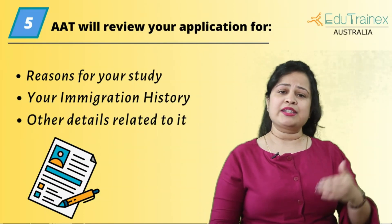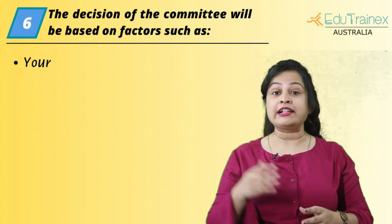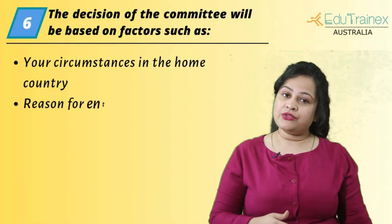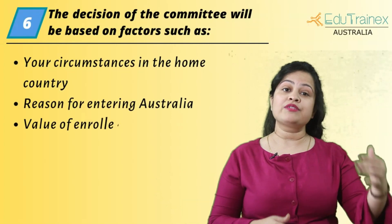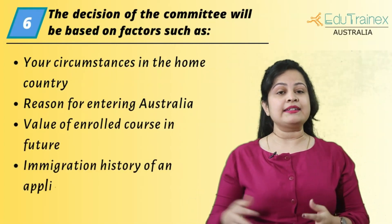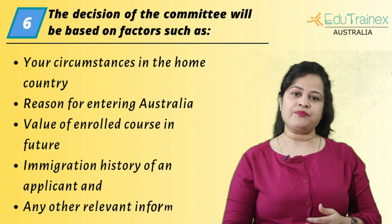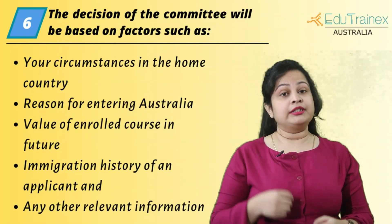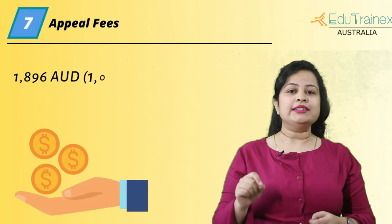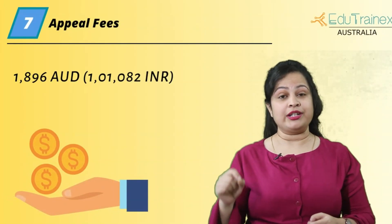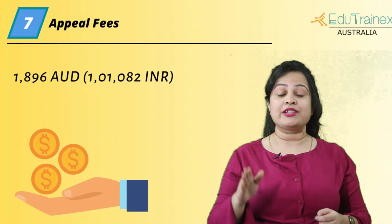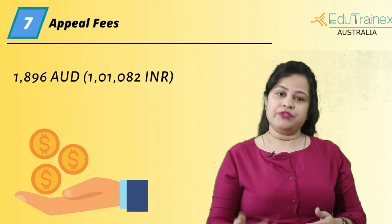The committee decides based on factors such as your circumstances in the home country, reason for entering Australia, value of the enrolled course in the future, immigration history of the applicant, and any other relevant information. For the appeal, you will be required to pay 1,896 Australian dollars, which is around 1,10,082 INR, for reviewing.